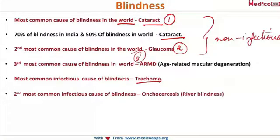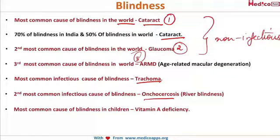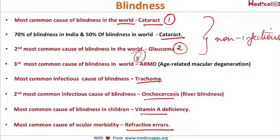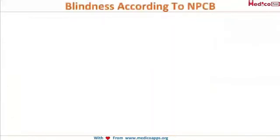The second most common cause of infectious blindness is onchocerciasis. The most common cause of blindness in children is vitamin A deficiency. The most common cause of ocular morbidity is refractive errors. Ocular morbidity means the patient has complaints related to the eyes — it affects them without necessarily leading to complete blindness.